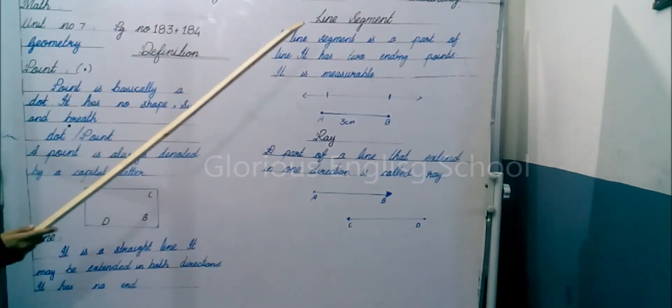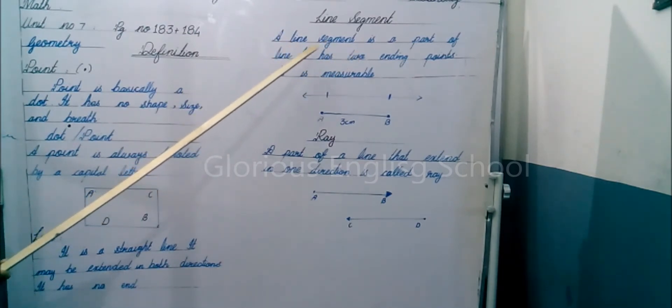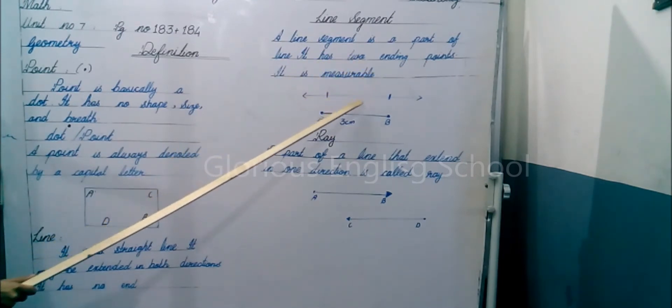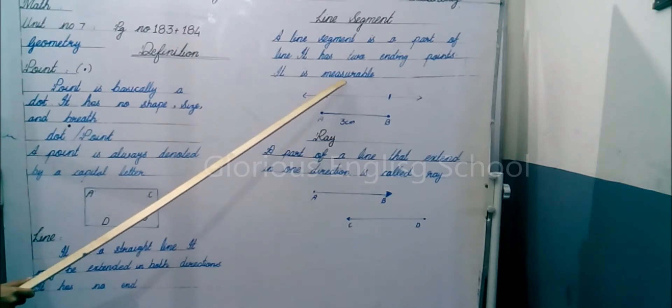Line segment. A line segment is a part of a line. It has two ending points. It is measurable.